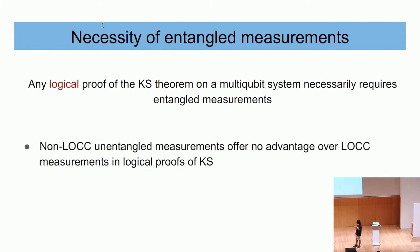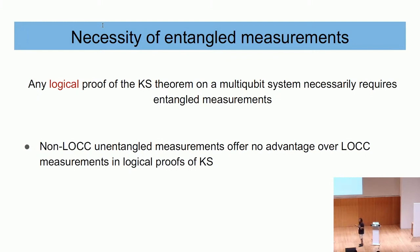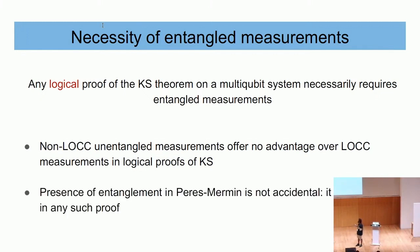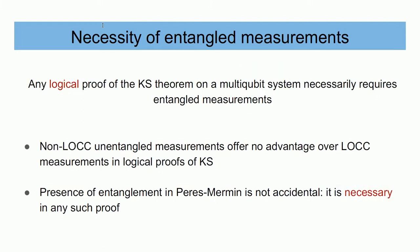This is interesting partly because, unlike Bell, in a Kochen-Specker setup you have more measurements available — including unentangled global and LOCC-type measurements. But unentangled measurements offer no advantage over entangled ones for logical proofs of Kochen-Specker. The presence of entanglement is not accidental; it is in fact necessary in any n-qubit logical proof you might construct.